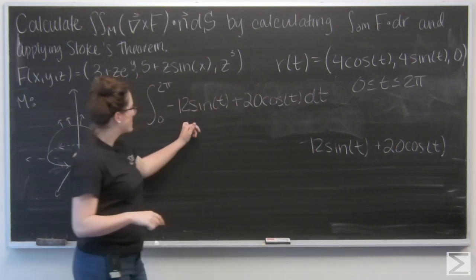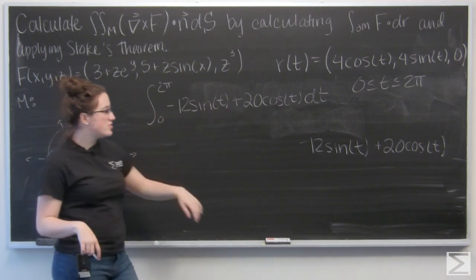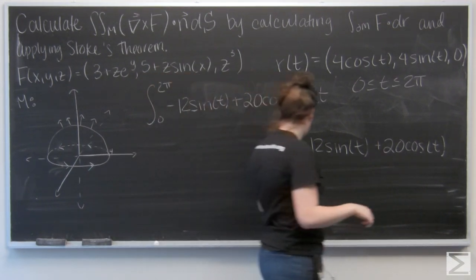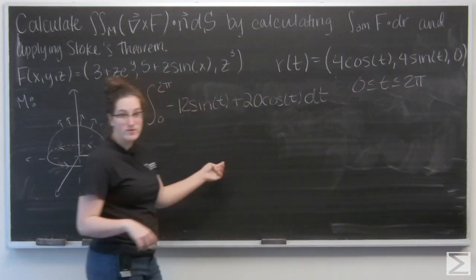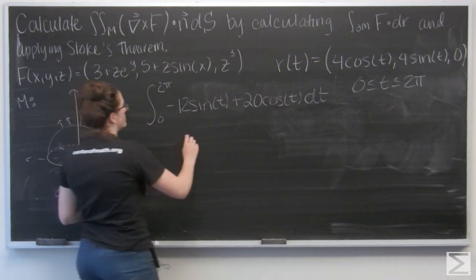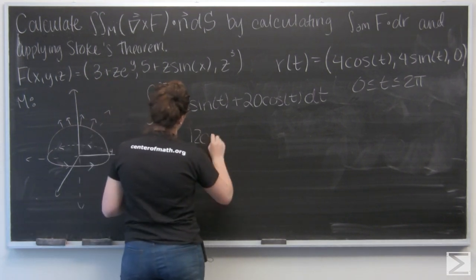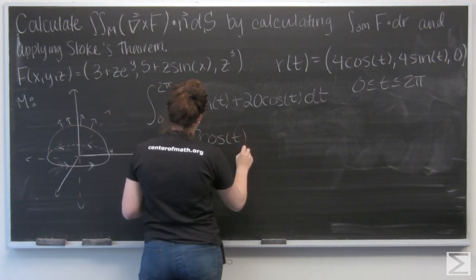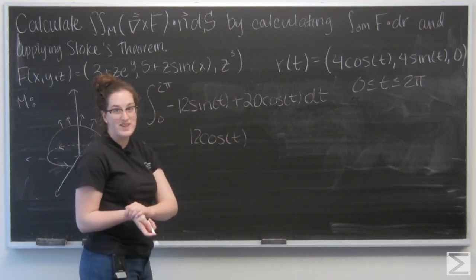So I just have the integral of negative 12 sine T plus 20 cosine of T dt from 0 to 2 pi. And let's go and integrate with respect to T. So negative 12 sine T becomes 12 cosine T. And 20 cosine T becomes 20 sine T.